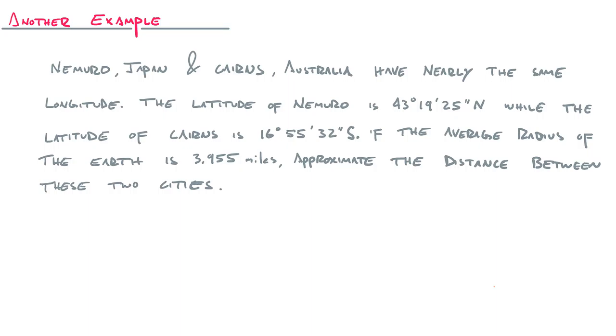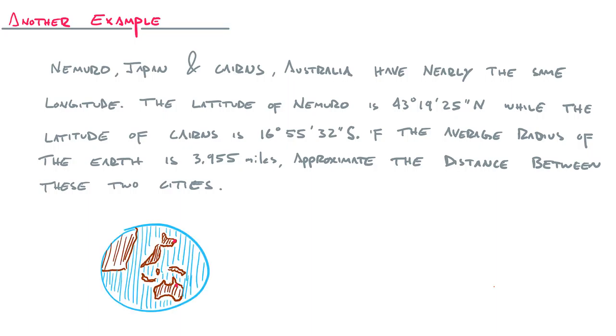Okay. So first and foremost, I think what we need to do is visualize what the heck this thing is asking us to do. So here's the earth. And I try to draw on there Nemuro, Japan and Cairns, Australia are about like this. Not to scale, obviously.